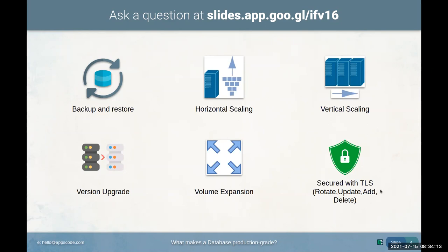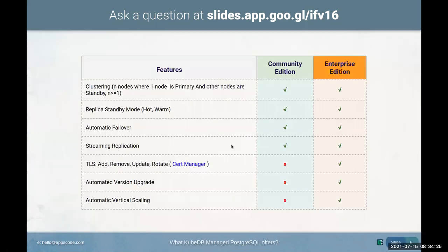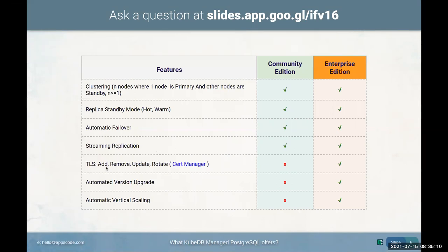We also need volume expansion in case of storage shortage, and TLS security to ensure we have a secure server. Now let's look at what KubeDB PostgreSQL offers. The operator supports clustering — with three nodes, one node is the primary and the others are standby, syncing data with the primary. We also support standby mode for both hot and warm mode, and automatic failover — if the primary goes down, one of the standbys takes the primary role.